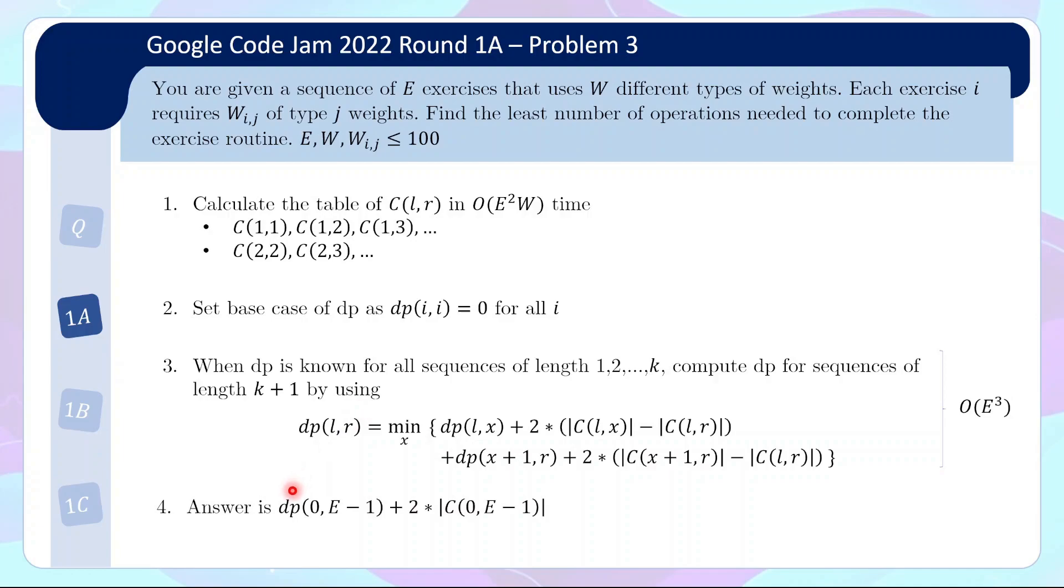And lastly the answer is just the DP from all the way zero to the last exercise but we need to make an adjustment because again the DP is relative to the common requirement so we need to start actually move from the empty stack to the common requirement and then at the end take off the common requirement to produce the empty stack again. So this is actually the final answer.